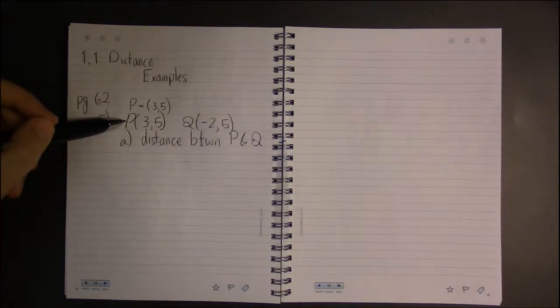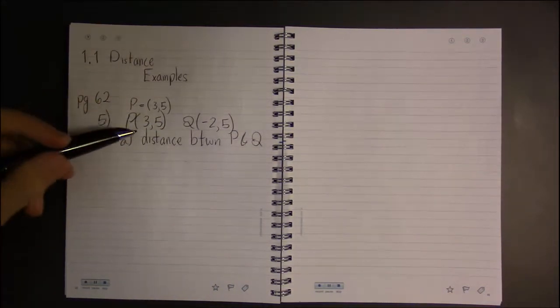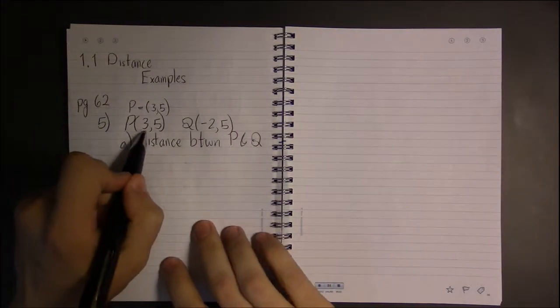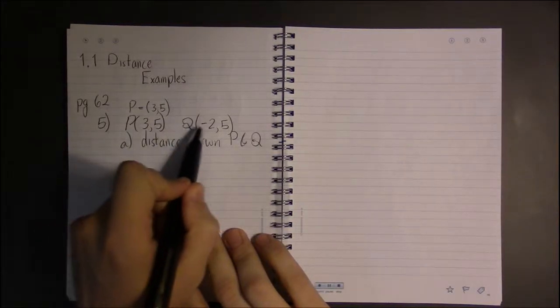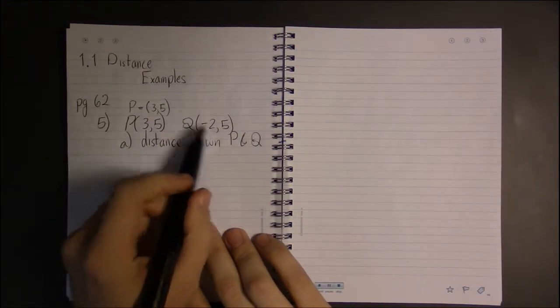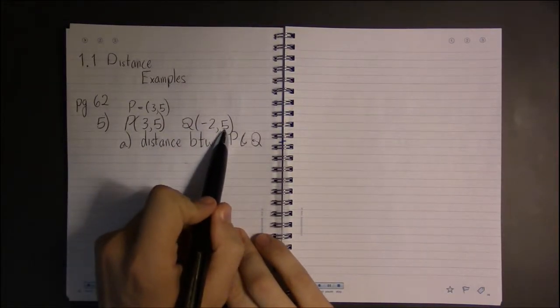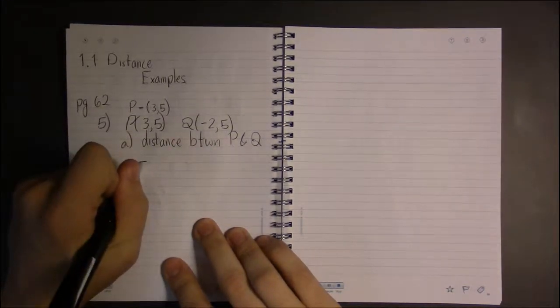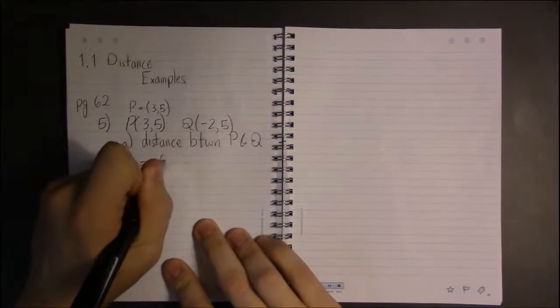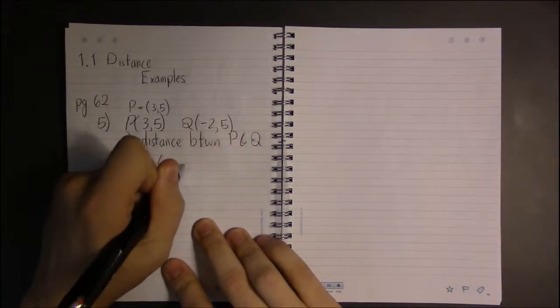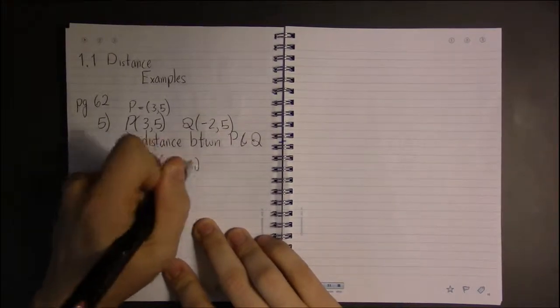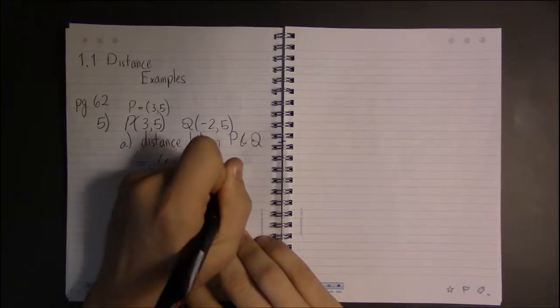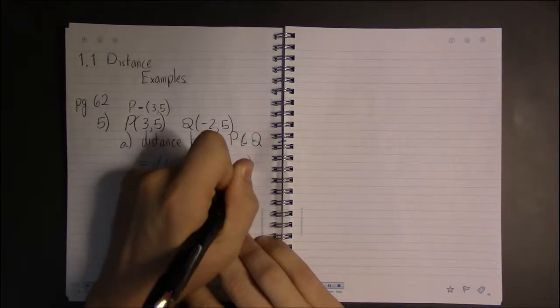Let's use our formula. We're supposed to compute the difference in x's squared and add it to the difference in y's squared. So this distance is equal to the square root of (x2 - x1)² + (y2 - y1)².